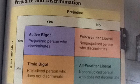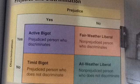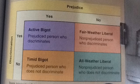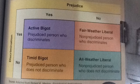The third type is the fair-weather liberal. This is the person who is not prejudiced in belief but discriminates because of social pressure — think about the guy who isn't racist but laughs at a racist joke because all his friends are laughing. Finally, we have the all-weather liberal. This person is not prejudiced and does not discriminate. It's an act of choice by this person to stand up against bigots.